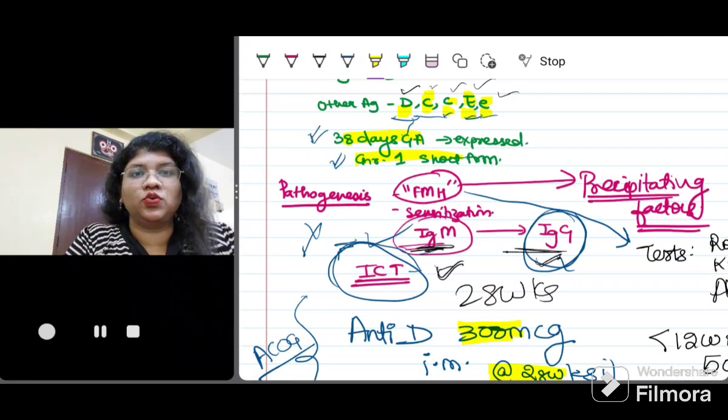Some of the procedures that we do like internal podalic version, external cephalic version, amniocentesis, choriovillus sampling, all these can also precipitate fetomaternal hemorrhage.